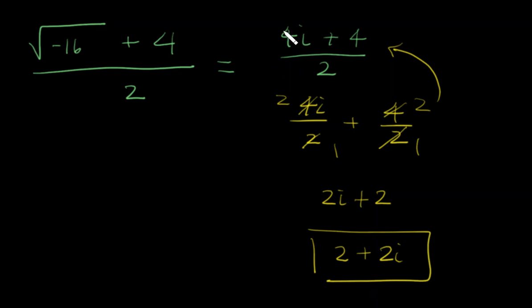Now also, look over here. It's a 4 and a 4, so we can actually take out a 4. Factor out a 4. Becomes i plus 1, over 2.